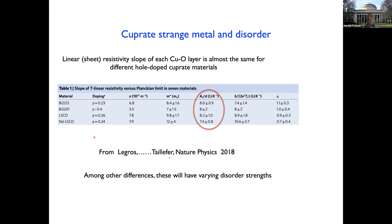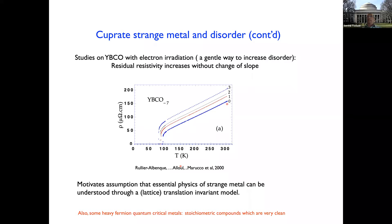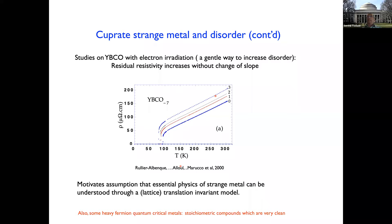It's possible to tune disorder in a single cuprate material. In a somewhat obscure but seemingly reliable paper by Conray and collaborators, they took yttrium barium copper oxide and studied it with electron irradiation, which is a very gentle way to increase disorder strength. What you see is that the slope of the linear resistivity does not change as disorder increases — only the intercept changes. The residual resistivity changes, but not the slope itself. All these phenomena suggest that disorder is not critical in understanding the physics of these metals.